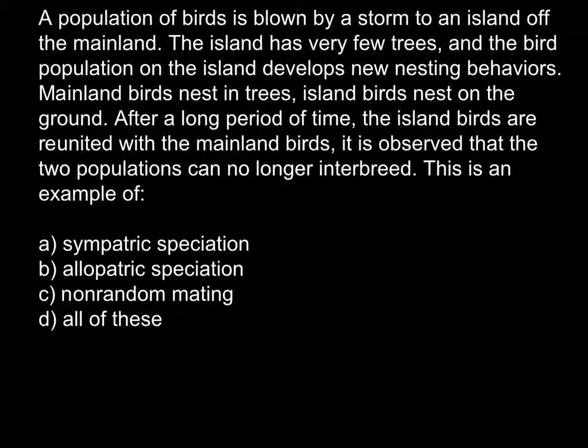This is an example of: answer A, sympatric speciation; answer B, allopatric speciation; answer C, non-random mating; or D, all of these. I would start with answer C, non-random mating. One example is peacocks, where female partners choose male partners depending on coloration. This is non-random mating, so we can cross out this answer because we have two species that evolved due to separation in space. We can also cross out answer D, all of these, because we already eliminated one answer.